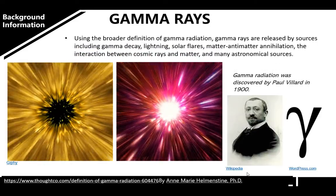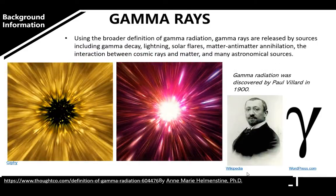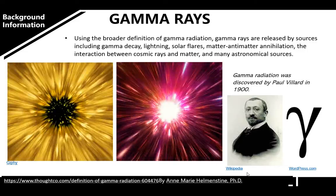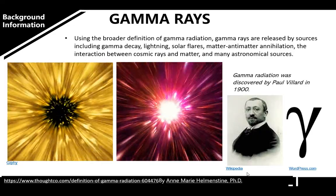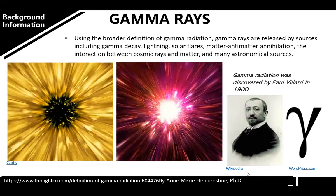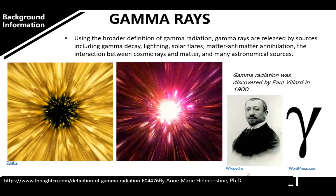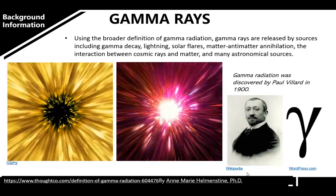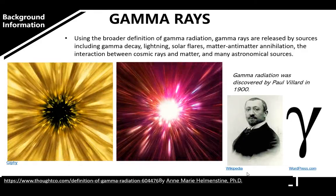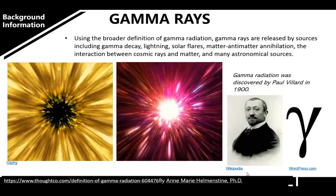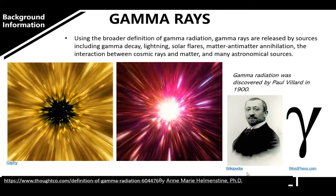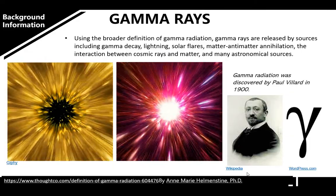Using the broader definition of gamma radiation, gamma rays are released by sources including gamma decay, lightning, solar flares, matter, antimatter, and annihilation — as well as the interaction between cosmic rays and matter, and many astronomical sources. Gamma radiation was discovered by Paul Villard in the 1900s.